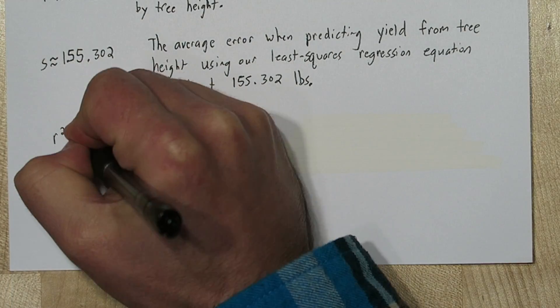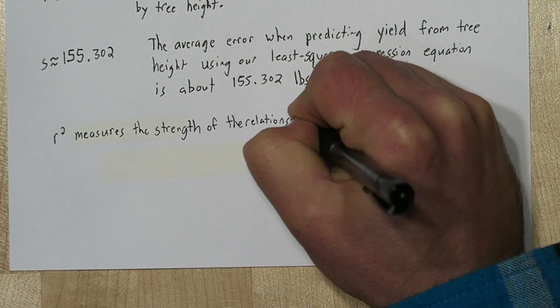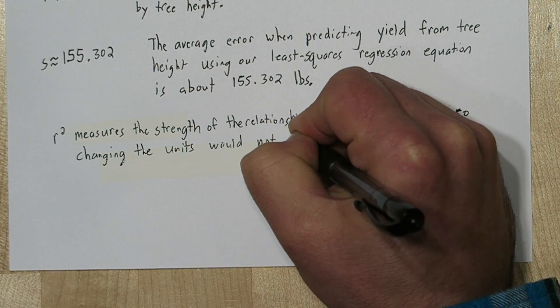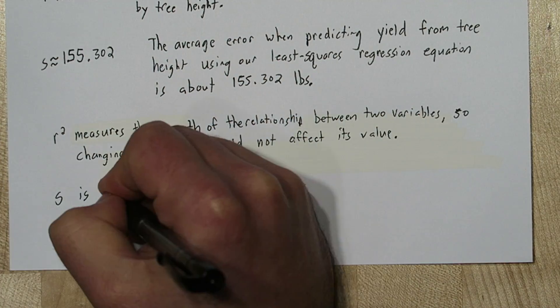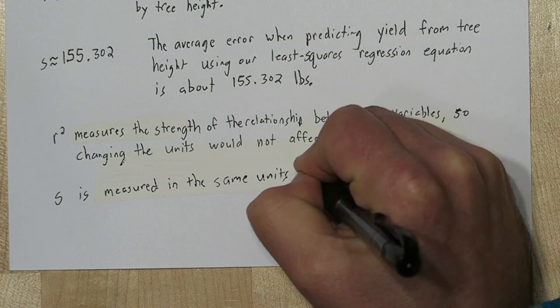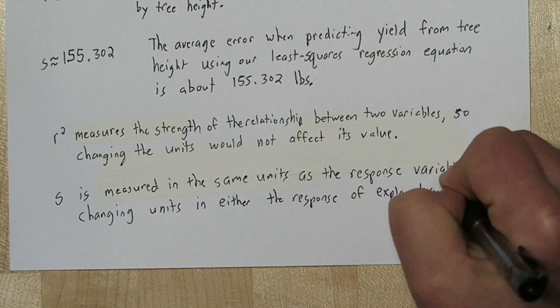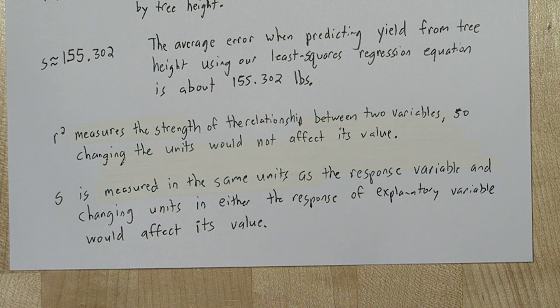R-squared measures the strength of the relationship between two variables. So changing the units would not affect its value. S, however, is measured in the same units as the response variable. And changing units in either the explanatory or the response variable would cause its value to change.